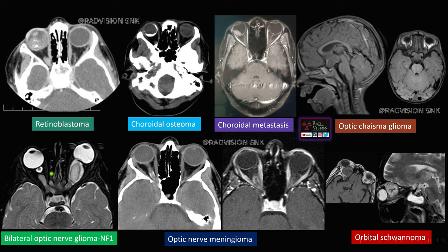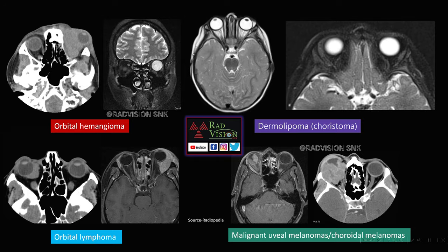Tram-track calcification is seen in optic nerve meningioma, which shows enhancement after contrast. This is a case of orbital schwannoma showing target appearance with central necrosis. Orbital hemangioma appears hyperdense on CT and hyperintense on T2. Dermolipoma or choristoma shows a fat-containing lesion at the lateral canthus, suppressed on fat-suppressed sequences. Orbital lymphoma appears hyperdense on CT with intense enhancement in the lateral orbit. Finally, this is a case of malignant uveal or choroidal melanoma.